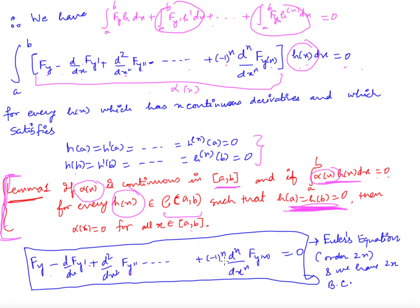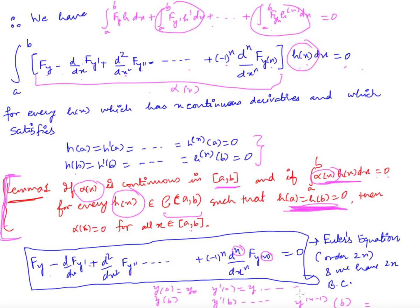This is a differential equation of order 2n, because the nth derivative of f_{y^(n)} introduces another nth derivative, giving 2n in total. The solution will contain 2n arbitrary constants, obtained using the 2n boundary conditions: y(a), y'(a), ..., y^(n−1)(a) and y(b), y'(b), ..., y^(n−1)(b) are all specified.